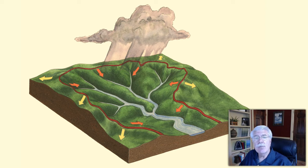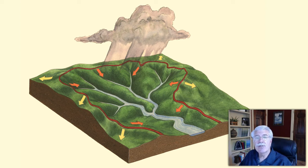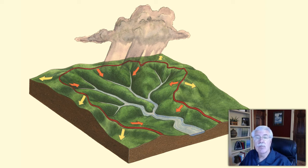The land upstream from you makes up your watershed. As you move downstream, more streams and rivers flow together. Then all the new land drained by those new streams adds to your watershed. So your watershed depends on where you are along a stream, river, lake, estuary, or ocean.